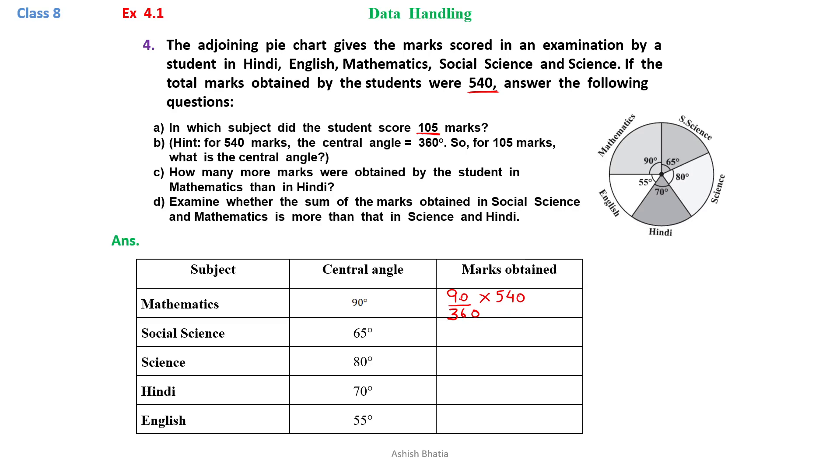Here we can see that we can cancel 90 and 360. We will get 1 by 4. So, 1 by 4 into 540. When we cancel this, what do we get is 4 1s are 4, 4 3s are 12 and 2 carry over, 4 5s are 20. So, marks obtained will be 135 in Mathematics.